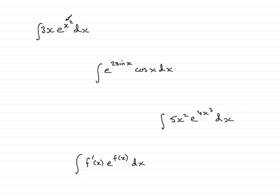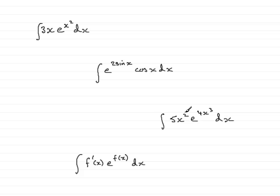If you differentiate the f of x here — the x squared — you'd get 2x, and notice how you've got something times x here. In this example, we've got 2 sine x as f of x, and differentiating 2 sine x gives 2 cos x, so you've got something times cos x here. Similarly, the f of x is 4x cubed, and differentiating that gives 12x squared — and again, you've got something times x squared here.